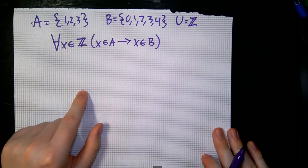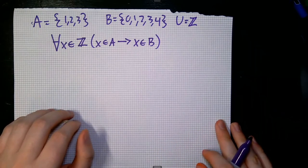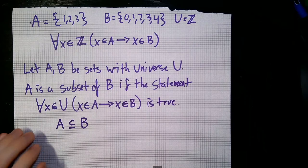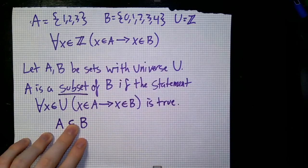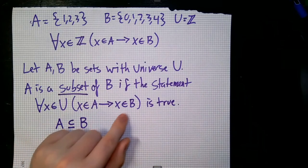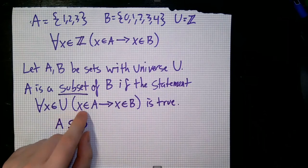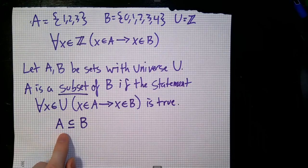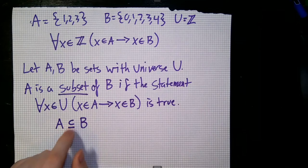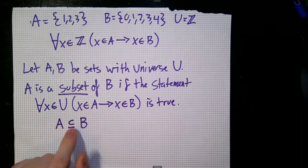This kind of relationship — where one set's elements are all contained within another — is called the subset relationship. We let A and B be sets with universe U. We say A is a subset of B if the statement 'for all x in the universe, x ∈ A implies x ∈ B' is true. We write this as A ⊆ B. Basically, A is a subset of B if B contains every one of A's elements.